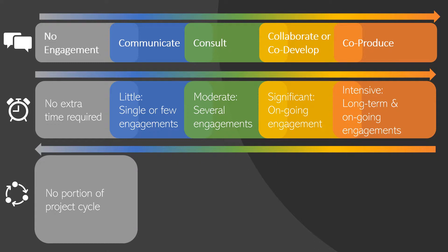Moving from right to left roughly represents the stage of the scientific process during which engagement is conducted. For example, communicating results takes the least time and is often done at the end of a project. Scientists may give a webinar or a fact sheet about their research findings.